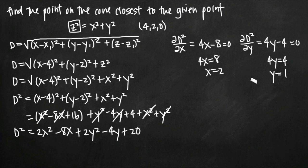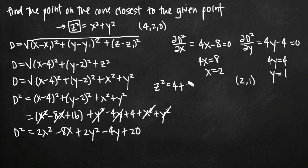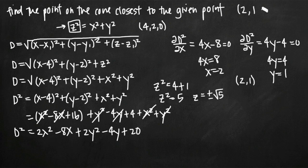Since we only have one x value and one y value, there is only one critical point (2, 1). To find the full coordinate point on the cone's surface closest to (4, 2, 0), we plug x = 2 and y = 1 into z² = x² + y²: z² = 4 + 1 = 5, so z = ±√5. This means there are two points equidistant from our given point: (2, 1, +√5) and (2, 1, −√5).